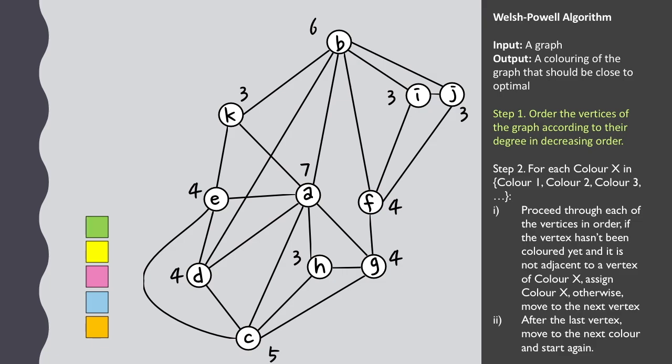Now at each iteration we have a color and we proceed through coloring all the vertices that aren't connected to a vertex of that color and aren't colored already.